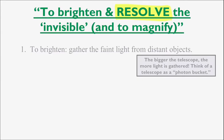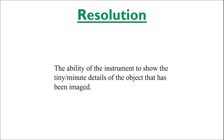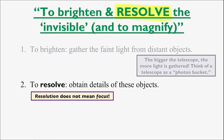So if the telescope can brighten dim light, what does it resolve? To resolve something in astronomy or photography lingo means to obtain the tiniest, minutest details of the objects being observed. The resolution of a telescope is its ability to do just that. But remember, resolution does not mean focus.